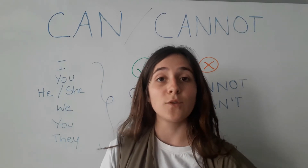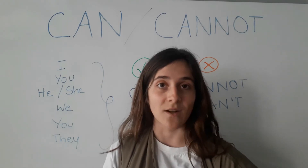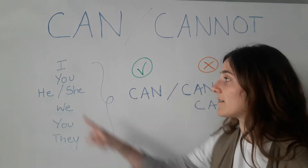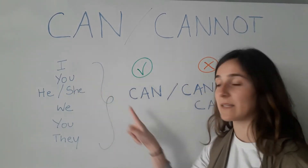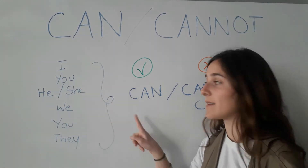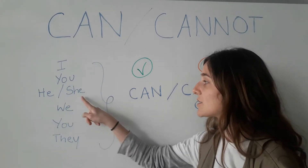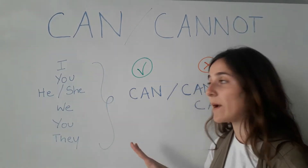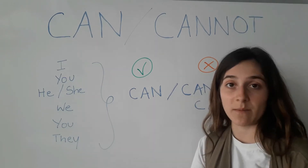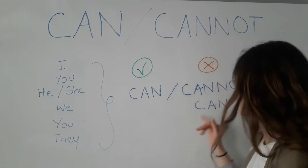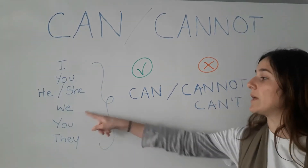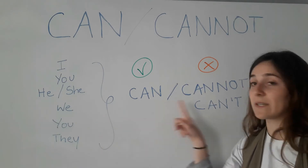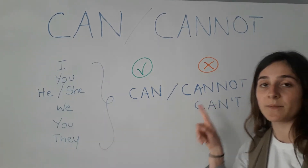So when you use can or cannot, you say: I can, you can, he can, she can — it's always can. The same applies for cannot: we cannot, you cannot, they cannot.